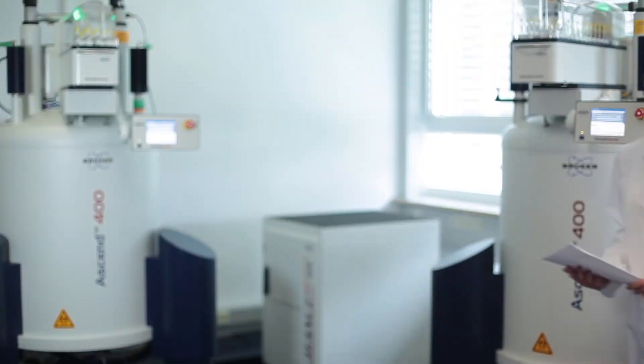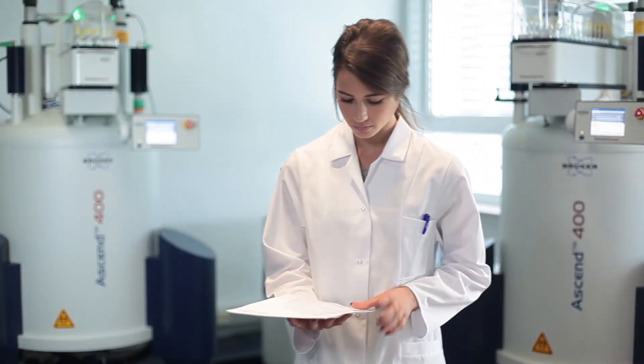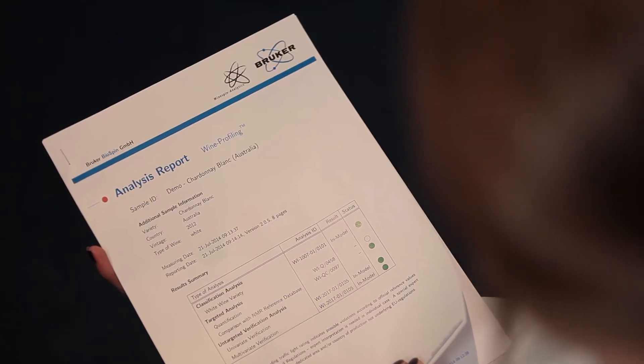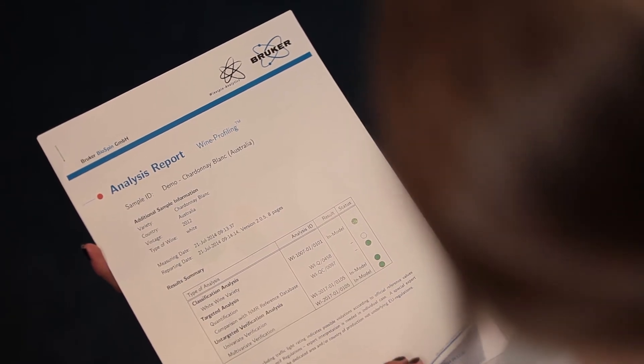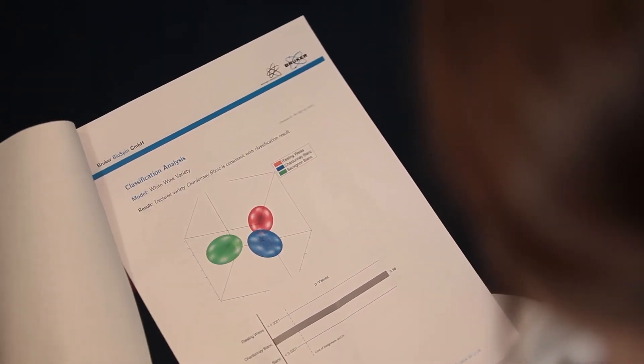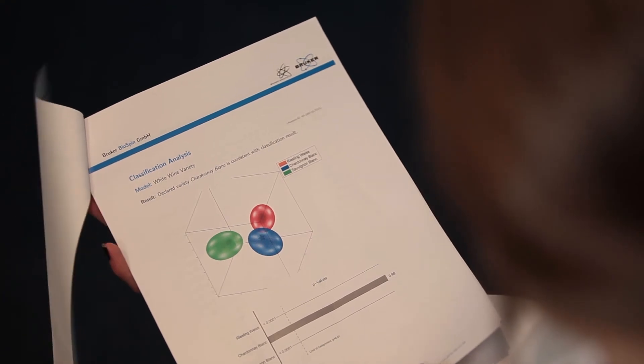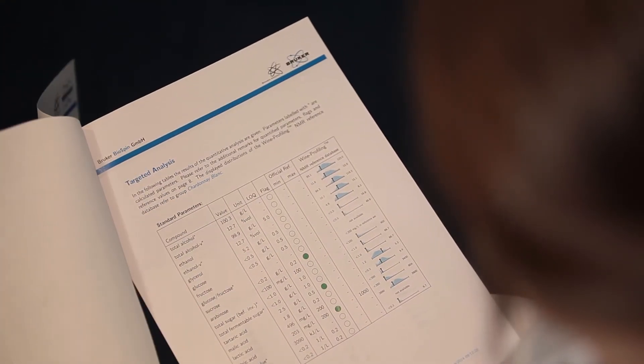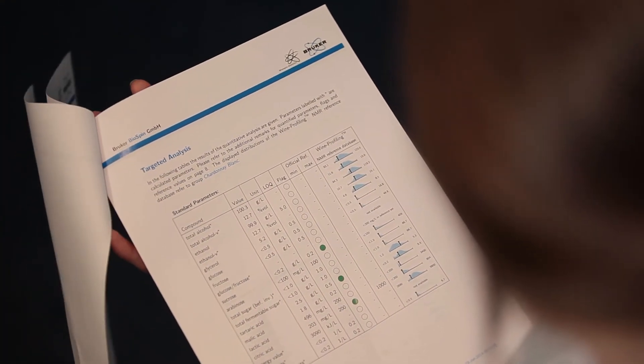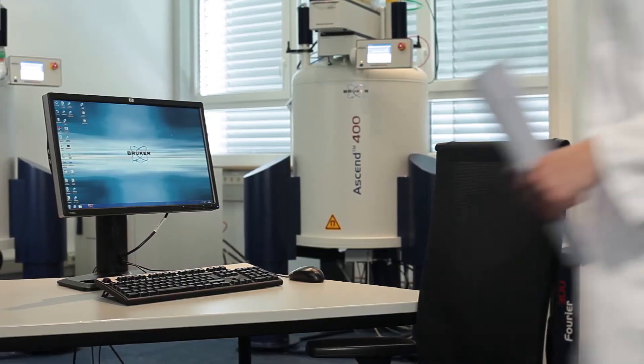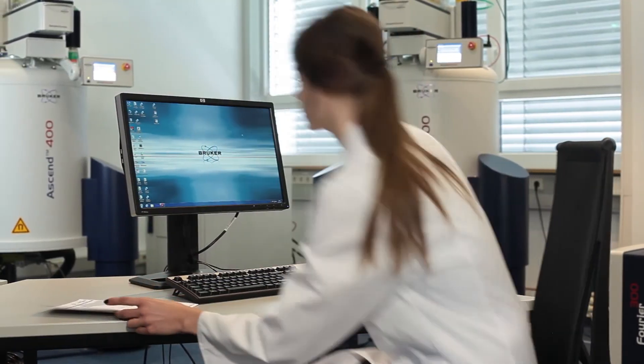An application-specific report is generated as the last step in the automatic analysis sequence. In this case, a wine report was generated. It contains the quantification results and statistically-derived authenticity parameters such as geographical origin, grape variety and vintage year.